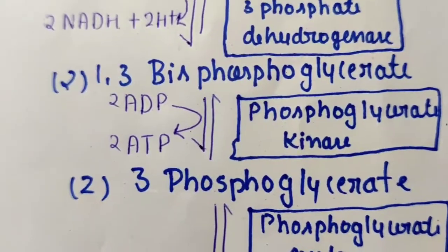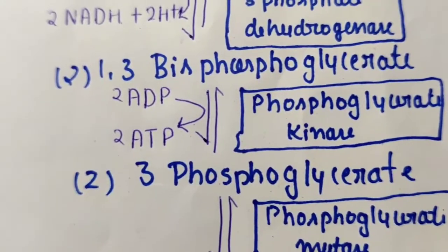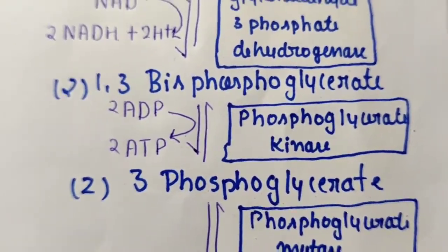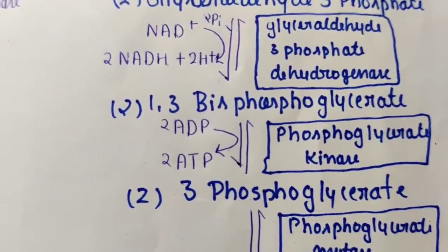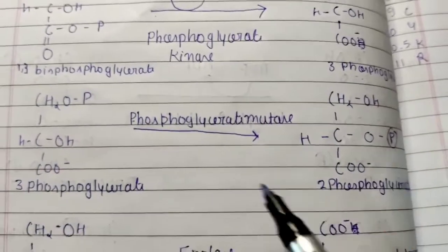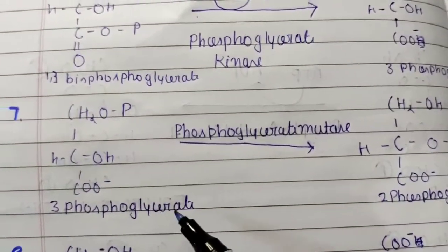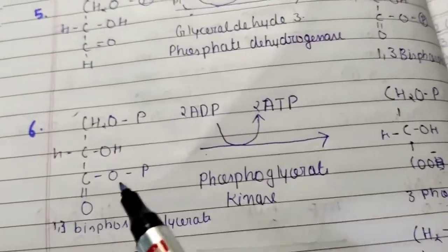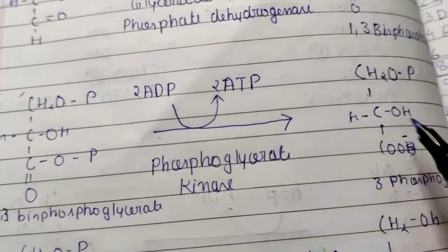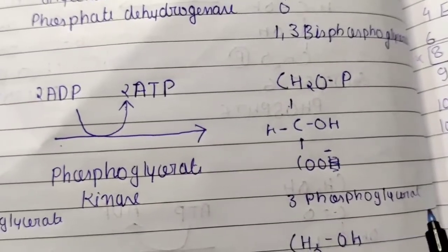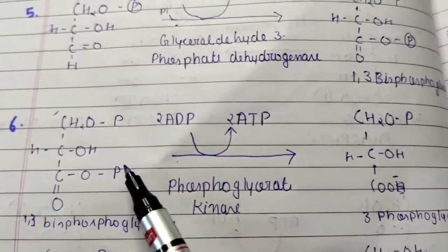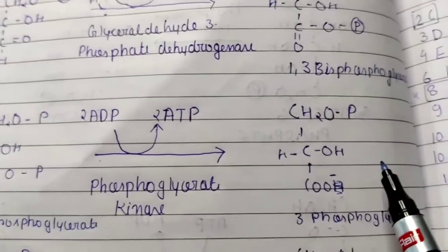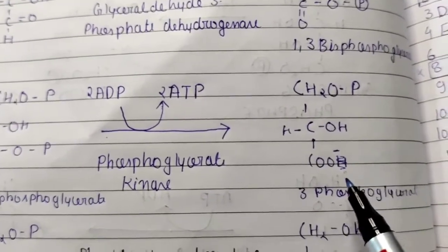1,3-bisphosphoglycerate is then converted to 3-phosphoglycerate. Here, 2 ADP molecules receive the high-energy phosphate, producing 2 ATP molecules. The enzyme responsible is phosphoglycerate kinase — kinase performs phosphorylation. So in this step, the phosphate from 1,3-bisphosphoglycerate is transferred to ADP, generating ATP, and the product is 3-phosphoglycerate.